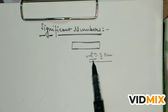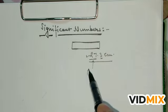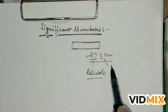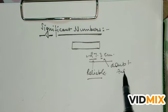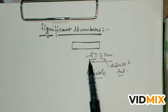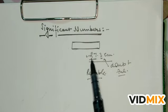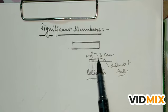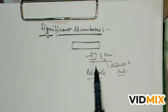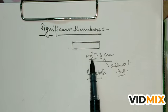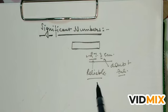This number '27' is reliable, and this number '3' is unreliable — means doubtful. So significant figures count all the reliable numbers plus one unreliable number. In this case, significant figures = 3. This is our significant figure.